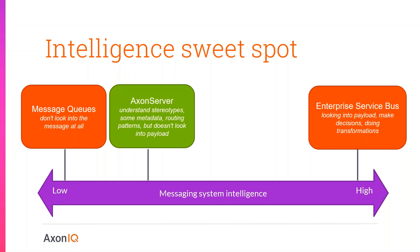We feel there's a very big middle ground where a lot of value can be achieved without the added complexity of an ESB, and that is where Axon Server was designed to be. It understands the stereotypes of messages and some metadata, and uses routing patterns based on those stereotypes, but doesn't look into the payload at all. All it needs to know is: is it a command, a query, or an event? It's the application's responsibility to ensure the payload format is correct - if sender and receiver have the same expectations, Axon Server does not interfere.